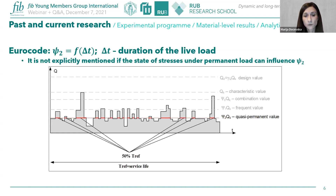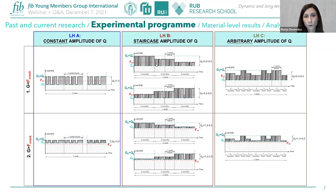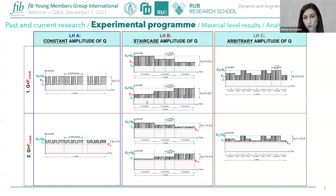Maria explains that her expectations are that for load histories with intensive loading at the beginning — where creep is more pronounced — higher ψ₂ coefficients may need to be expected compared to histories with monotonically decreasing load amplitude. This is a key motivation for the experimental program, as the codes currently do not address the influence of stress state or load history type on the quasi-permanent coefficient.